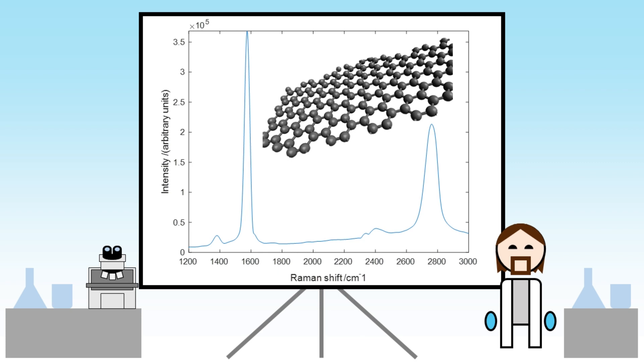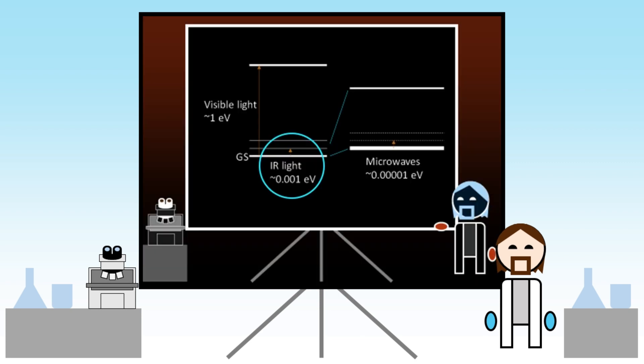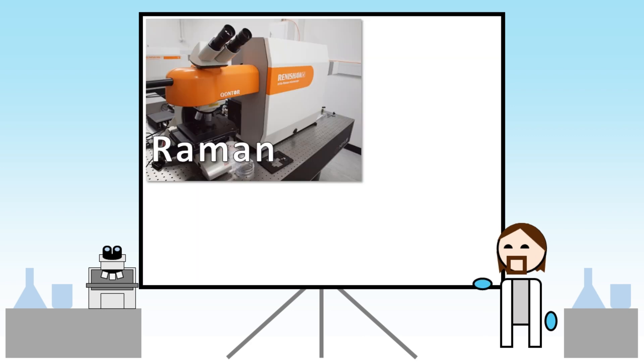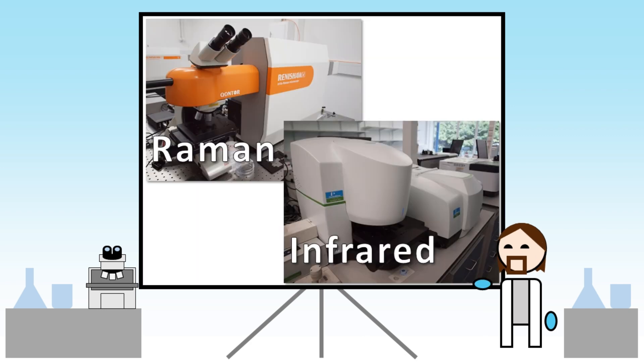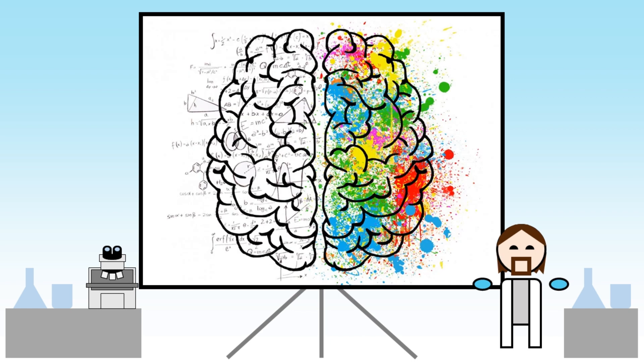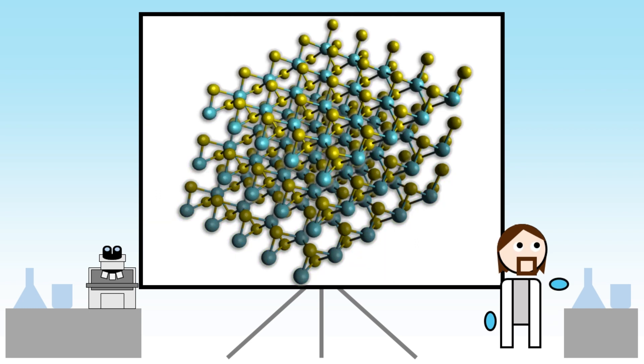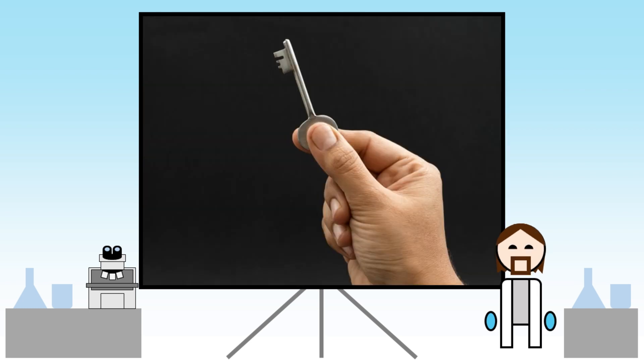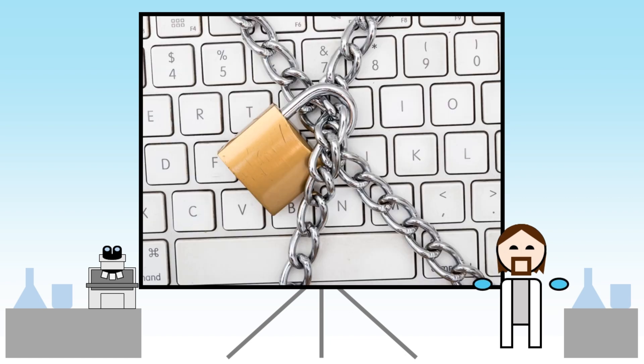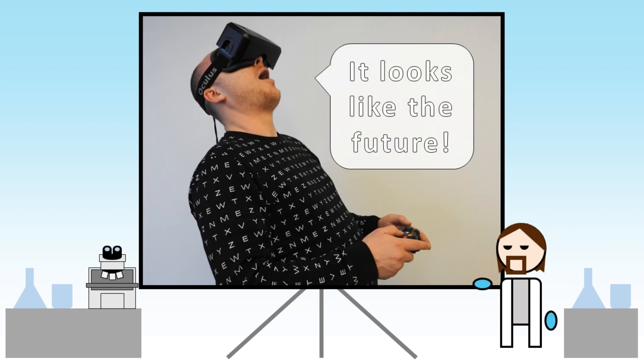By measuring the spectrum of Raman scattered light we get a complementary picture of the bond energies in our molecule to infrared spectroscopy. Between these two chemical spectroscopy techniques we can learn a huge amount about the chemistry of materials, like how many defects our graphene has or how many layers a flake of molybdenum disulfide has. This kind of information is key to unlocking the potential of these materials in new technologies.